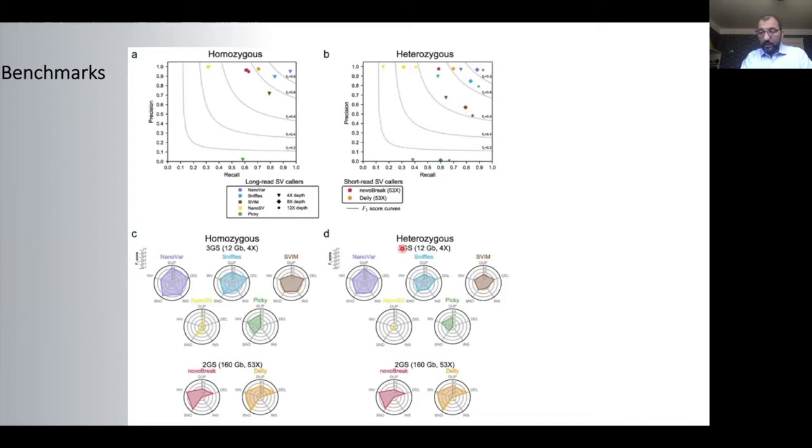We benchmarked NanoVAR with other strategies and demonstrated that it is superior in detecting both homozygous and heterozygous structural variants. For homozygous structural variants, we found that with only 4x coverage, we reached a very high confidence score in terms of recall and precision. You can see NanoVAR here compared to other software.